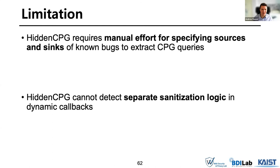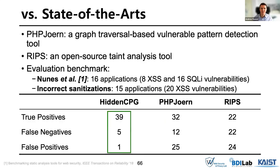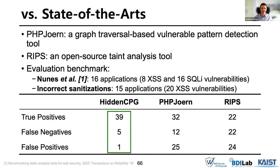Going back to your earlier point about looking at known vulnerabilities: do you think you'll have to update the system over time with new query patterns as new types of vulnerable patterns emerge? Yes. When new vulnerabilities are found, we need to extract the vulnerability and store it in the query database. So the tool is extensible and can be improved in that way.